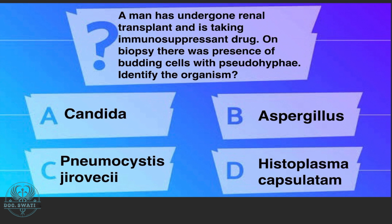Here is the next MCQ. A man who has undergone renal transplant and is taking an immunosuppressant drug had a biopsy showing budding cells with pseudohyphae. Identify this organism. Options: A) Candida, B) Aspergillus, C) Pneumocystis jirovecii, D) Histoplasma capsulatum. The correct answer is option A, Candida.